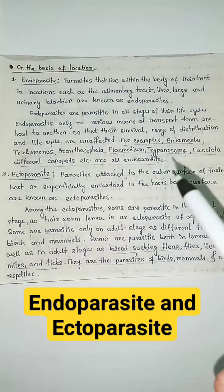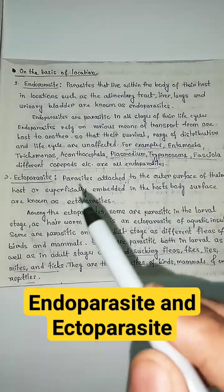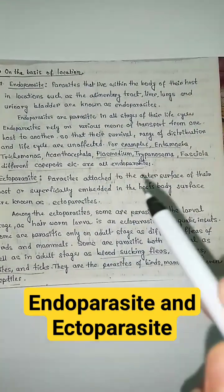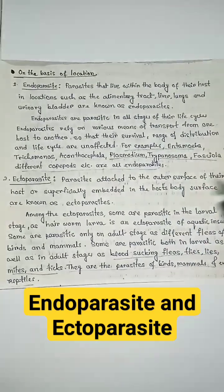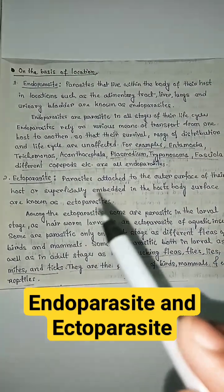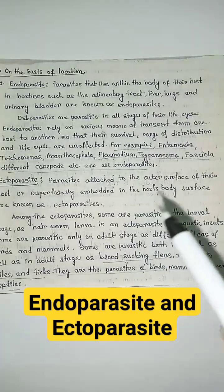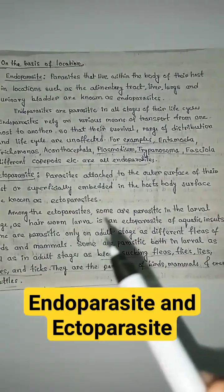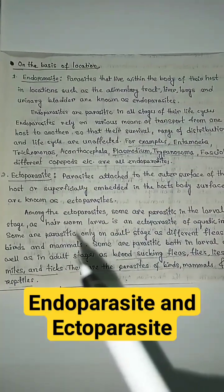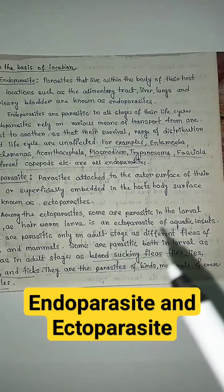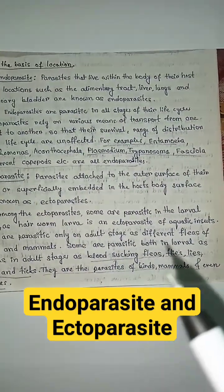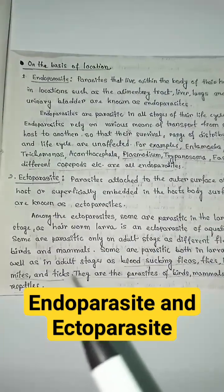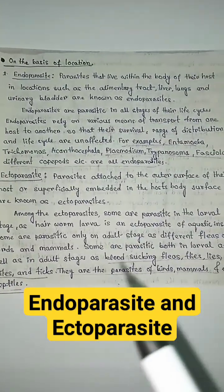all endoparasites. Next, ectoparasites — parasites attached to the outer surface of their host or superficially embedded in the host's body surface — are known as ectoparasites. Among the ectoparasites, some are parasitic only in the larval stage; for example, hairworm larva is an ectoparasite of aquatic insects. Some are parasitic both in the larval as well as the adult stage, such as blood-sucking organisms.